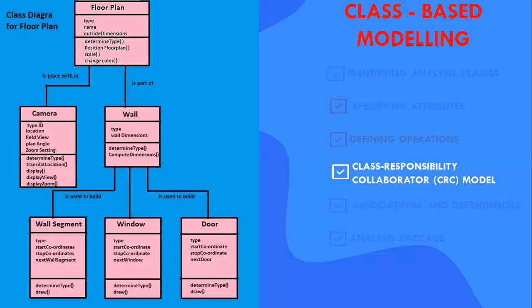Here, we can see a class diagram for the floor plan. The responsibilities are the attributes and operations that are relevant for the class which are stated simply. A responsibility is anything that the class knows or the class is going to do. Collaborators are those classes that are required to provide a class with the information needed to complete a responsibility. In general, a collaboration implies either a request for information or a request for some action to be taken. A simple CRC index card for the floor plan can be illustrated and the list of responsibilities shown on the CRC card is preliminary and subject to additions or modifications. The classes wall and camera are noted next to the responsibility that will require their collaborations.